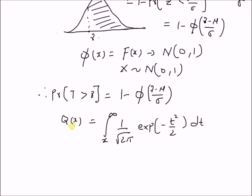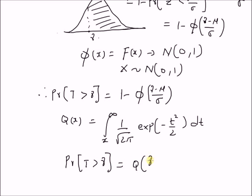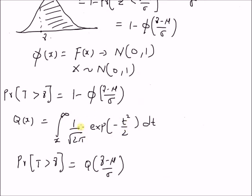Note that this function Q of x is also related to the error function and the complementary error function. Since Q of x is defined by this integral, the probability of t greater than gamma is clearly equal to Q of gamma minus mu by sigma. From the structure of this integral, we can clearly see that it is equal to 1 minus phi of x.